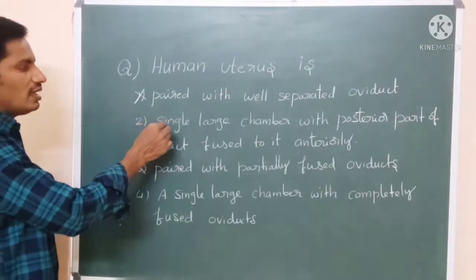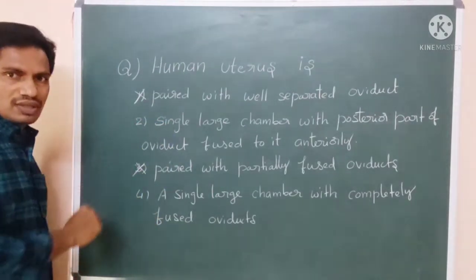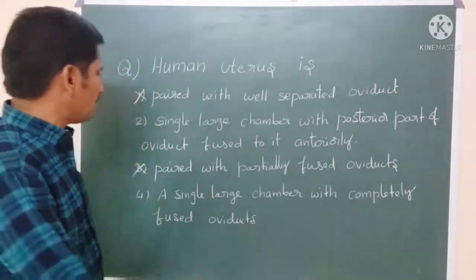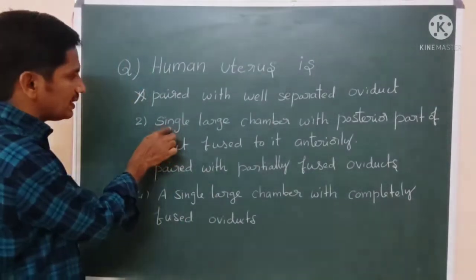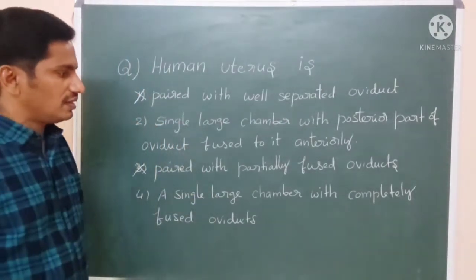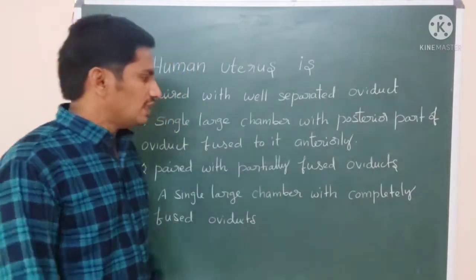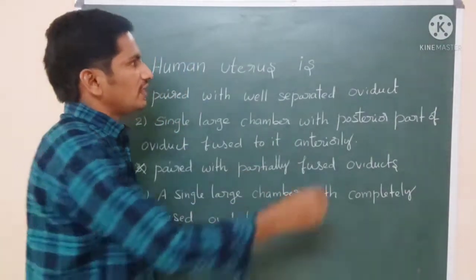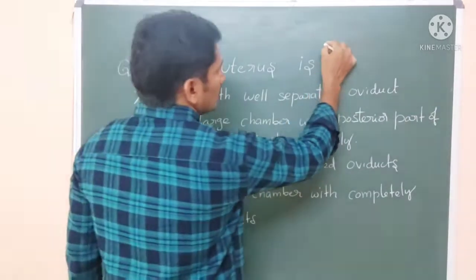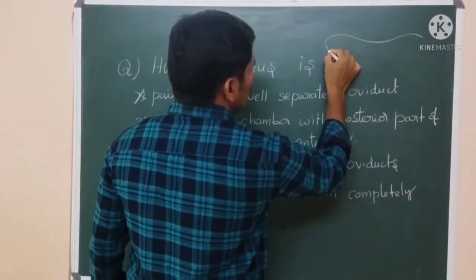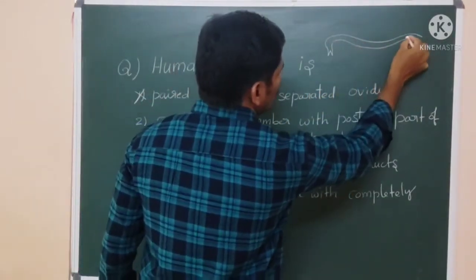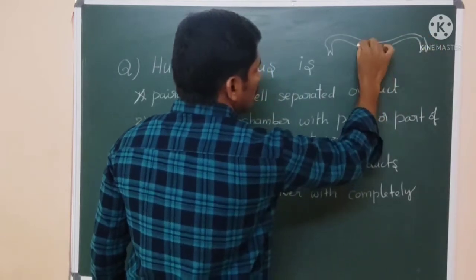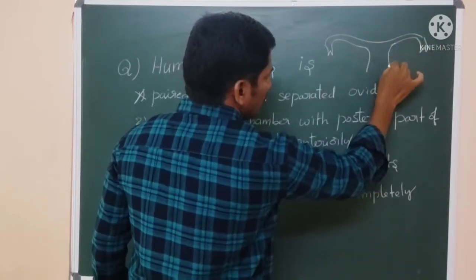You have to decide between the second and fourth options. Here both mention single large chamber, which is correct. But look at option D — single large chamber with completely fused oviducts. Actually, these oviducts are what we know as the fallopian tubes.